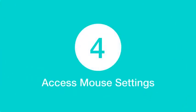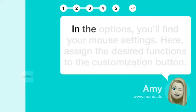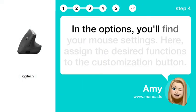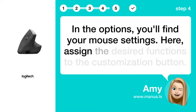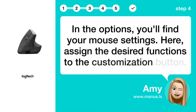Step 4: Access mouse settings. In the options, you'll find your mouse settings. Here, assign the desired functions to the customization button.